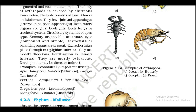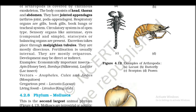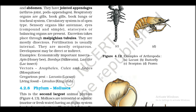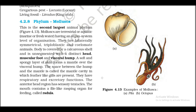Examples — economically important insects: Apis (honey bee), Bombyx (silkworm), Laccifer (lac insect), vectors Anopheles, Culex, and Aedes (mosquitoes), gregarious pest Locusta (locust), living fossil Limulus (king crab). Figure 4.12 examples of Arthropoda: A. Locust, B. Butterfly, C. Scorpion, D. Prawn.